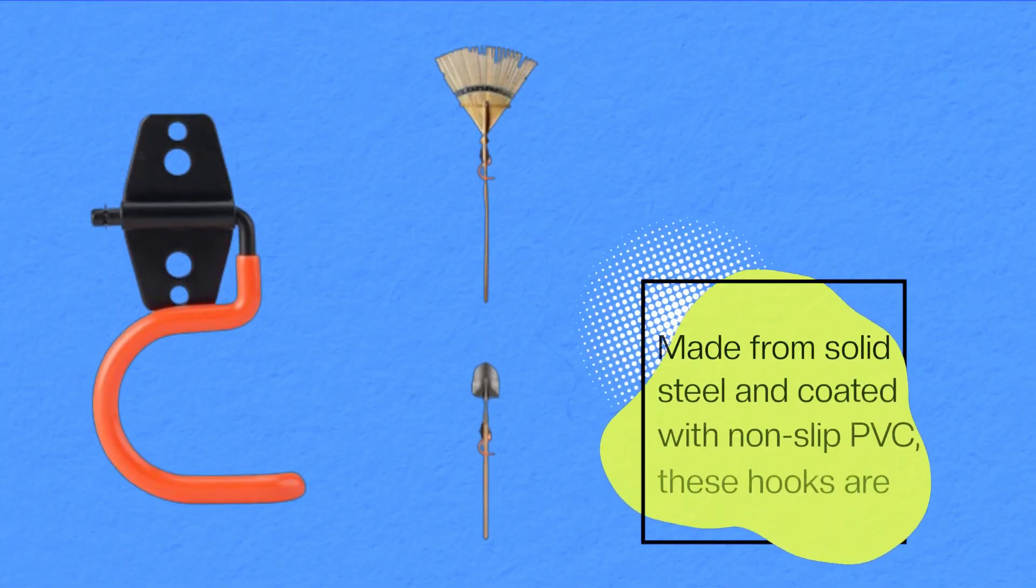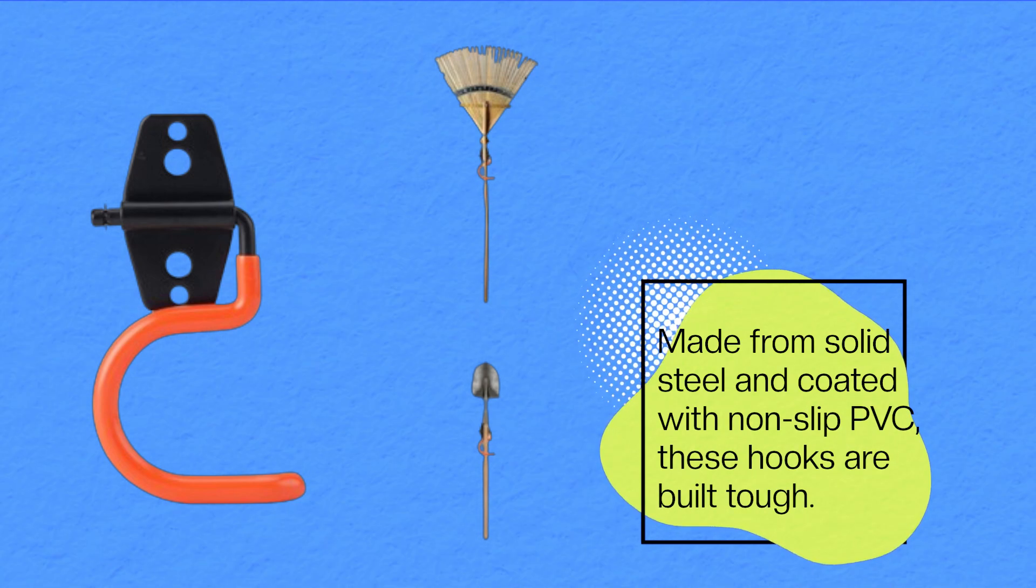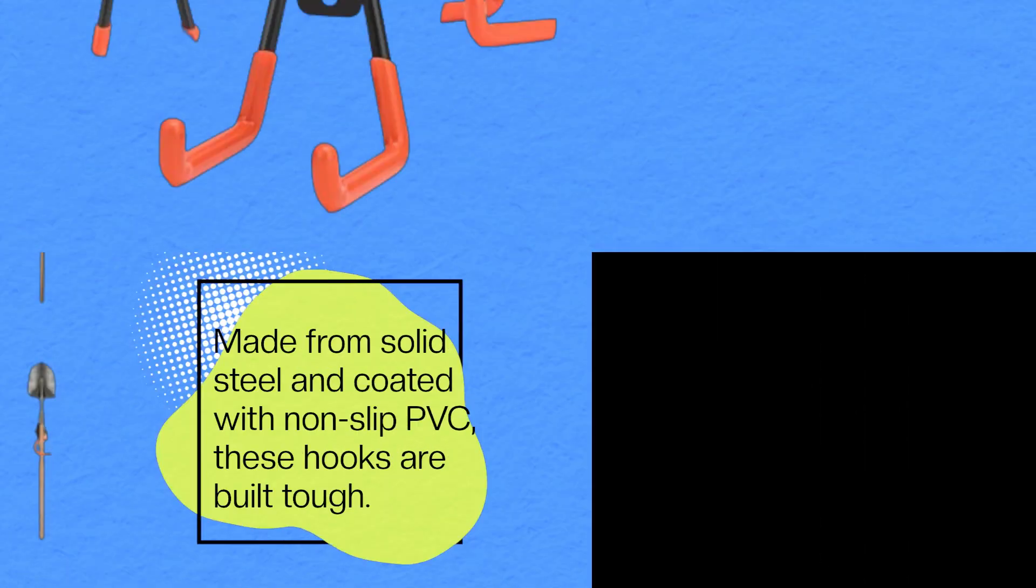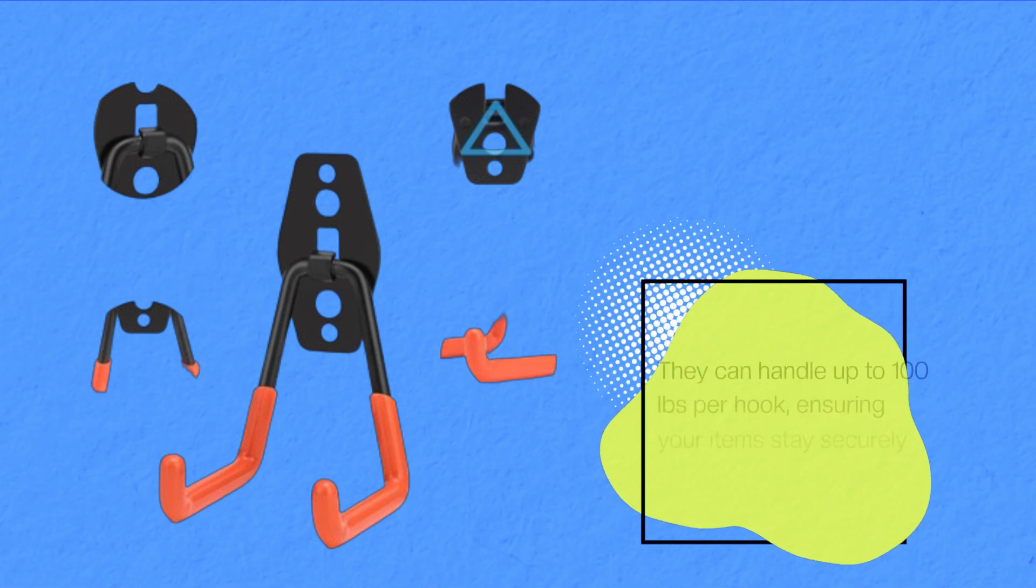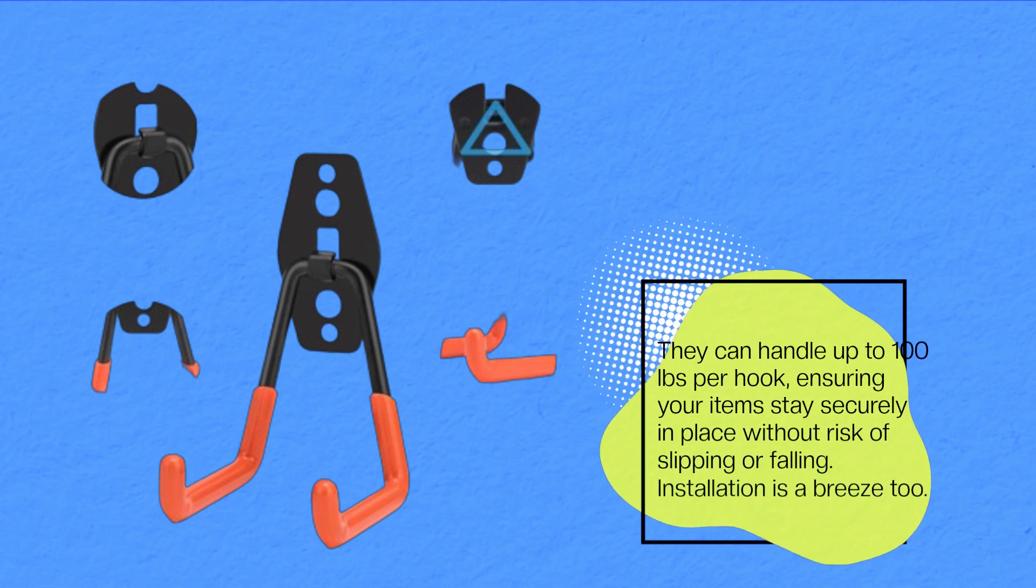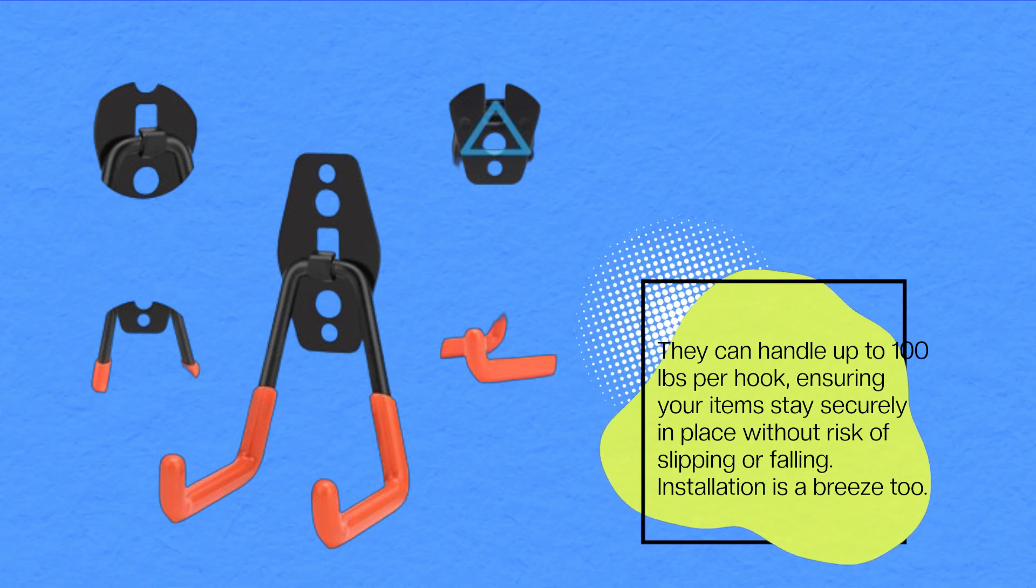Made from solid steel and coated with non-slip PVC, these hooks are built tough. They can handle up to 100 pounds per hook, ensuring your items stay securely in place without risk of slipping or falling.